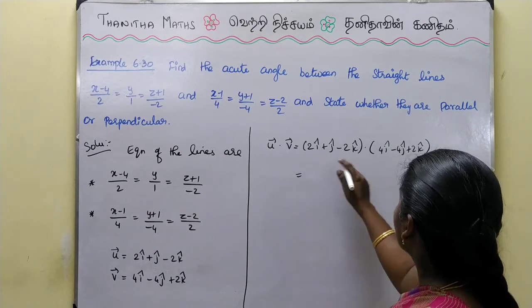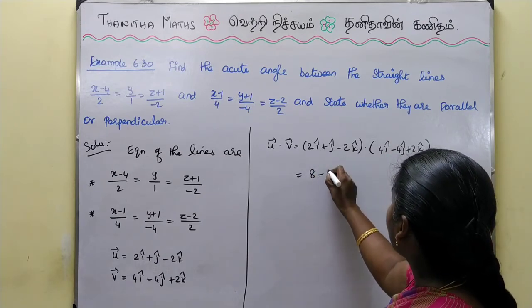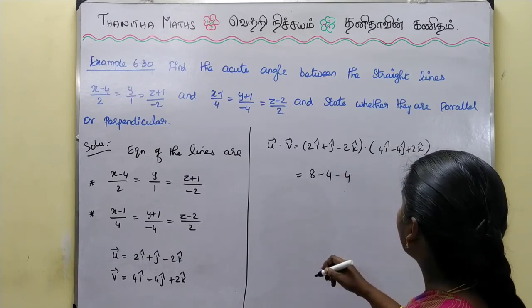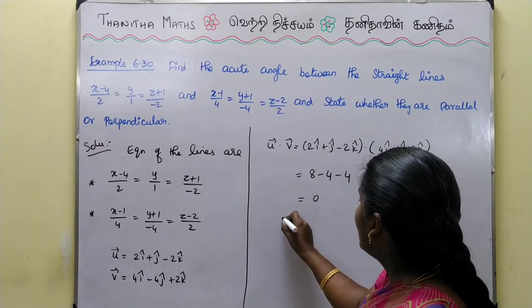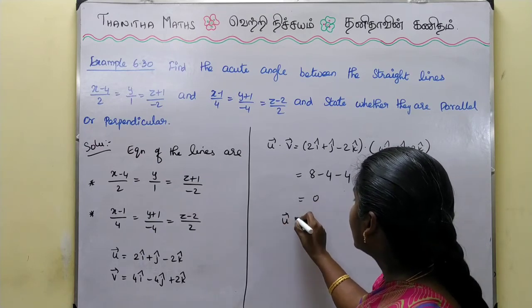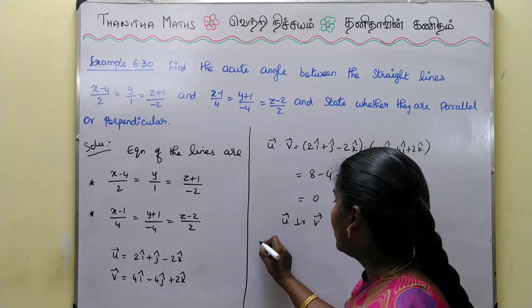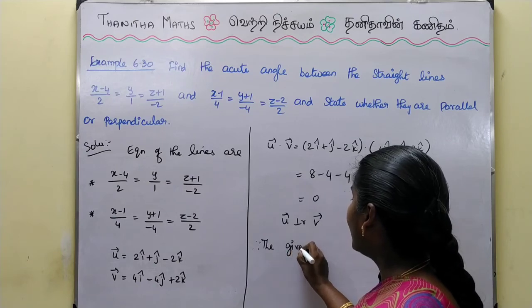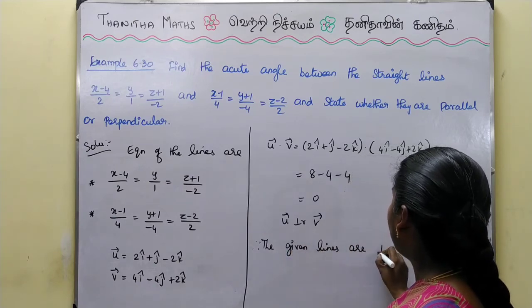Expanding: 2×4 + 1×(-4) + (-2)×2 = 8 - 4 - 4 = 0. Since the dot product is 0, the given lines are perpendicular.